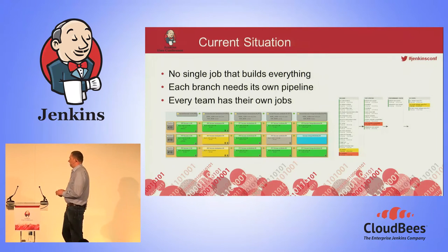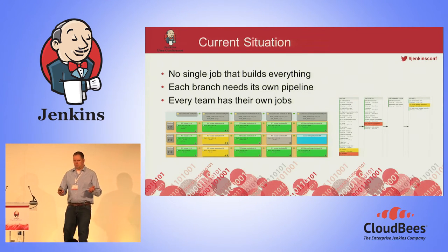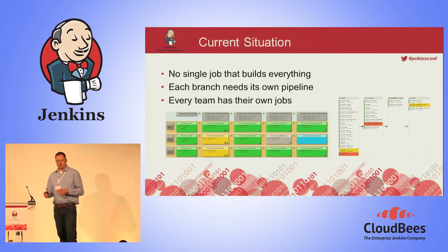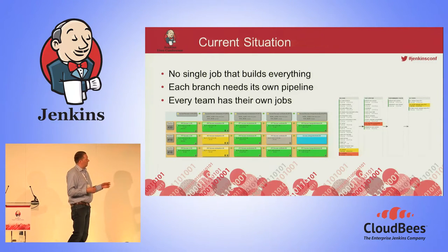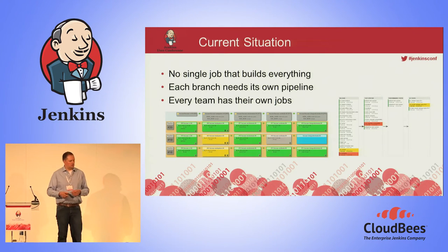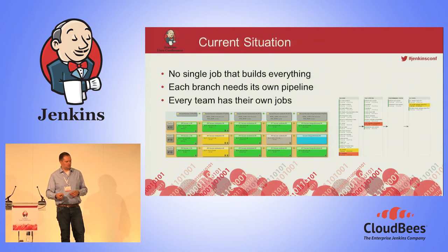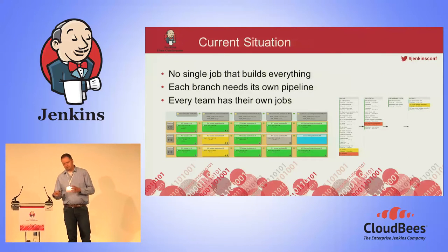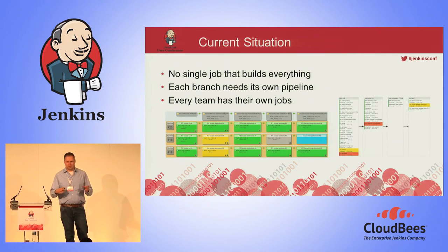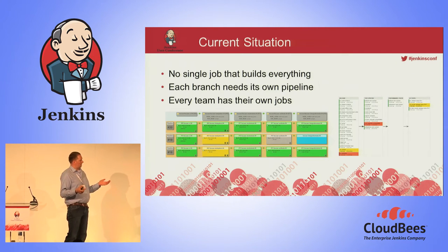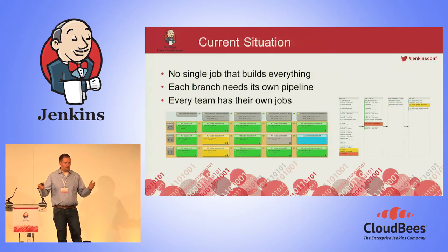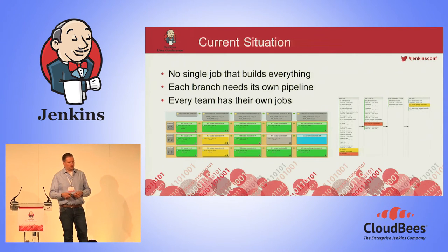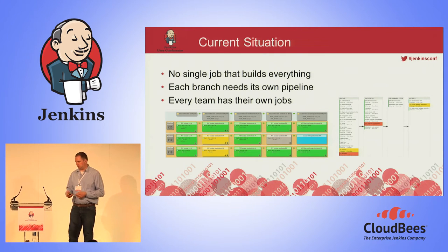So where are we today? As we heard in the keynote, we started small with a small Jenkins setup some years ago on a developer box with a single job. But over time our Jenkins setup has grown a lot. Different teams are using Jenkins. Since everyone is using Git, teams are having multiple branches they work on and they want their pipelines and jobs for each of those branches. So we end up with a lot of jobs and a lot of pipeline configurations, and we have a slight problem managing that complexity.